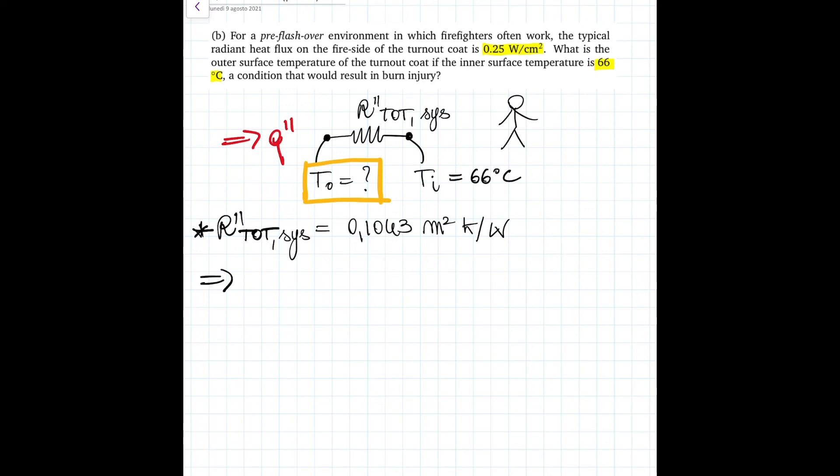As we're dealing with resistances, you know that we can write q'' equals T_o minus T_i over R''_total. Therefore, as you can imagine, by rearranging, T_o equals q'' R_total plus T_i, which is equal to by just substituting numbers in 0.25 times 10^4 watts over meter squared times 0.1043 meter squared Kelvin over watts plus 66 degrees.